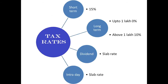To summarize the tax rates: for short term, 15%; for long term, two categories — up to 1 lakh it is 0, above 1 lakh it is 10%. Dividend and intraday are taxable as per the slab rate.